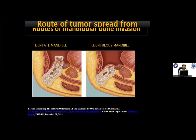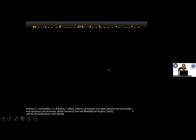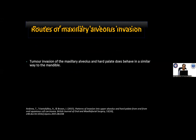Regarding routes of bone invasion: in a dentate mandible, the tumor spreads through the junction of the fixed and reflected mucosa. In an edentulous mandible, spread is through the socket of the gum or teeth. The spread of maxillary alveolus tumor into the maxillary alveolus is also similar to that of the mandible.